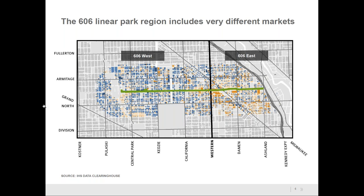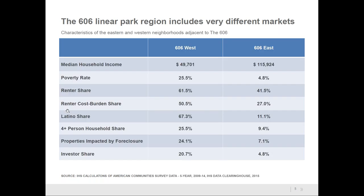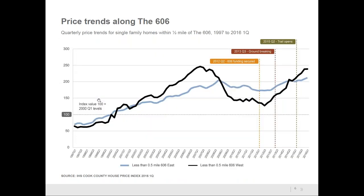The neighborhoods also looked really different from a socioeconomic and demographic housing market perspective. 606 West is substantially lower income, higher poverty, more renters, higher cost burden, predominantly Latino — which is important from an equity perspective — with larger family sizes and a lot more foreclosure distress and investor activity during the most recent housing market downturn. These are the very same populations and household types that we are most concerned with in terms of vulnerability to displacement in lost-affordability environments. So when we decided to study the 606, we segmented the market by wondering how house prices changed in 606 West compared to 606 East — and they changed pretty dramatically.